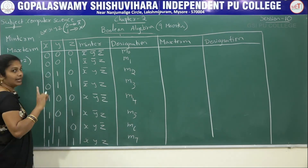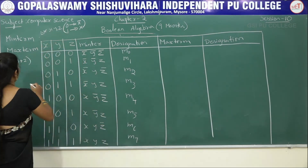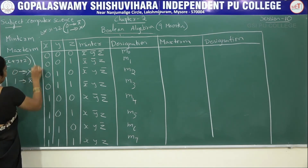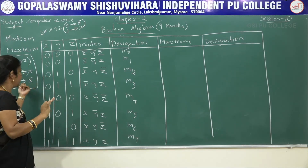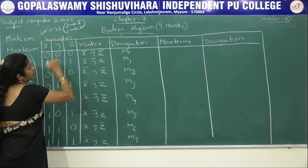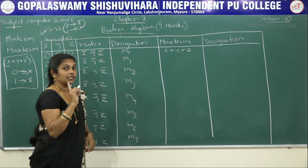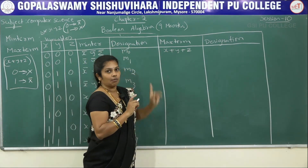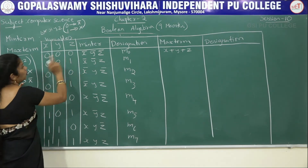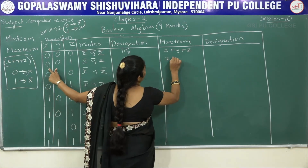For maxterm, it is a sum of all literals. The rule is the reverse of minterm: if the value is zero, the variable appears without complement; if the value is one, the variable appears with complement. So for maxterm: 0 → no bar, 1 → with bar. For the same variables x, y, z, we write x plus y plus z for each row, applying these rules.